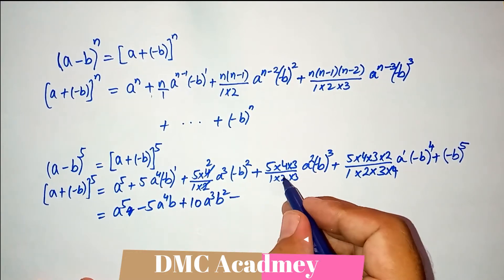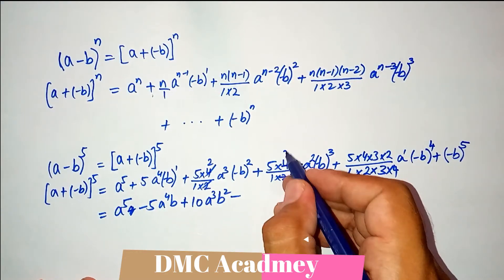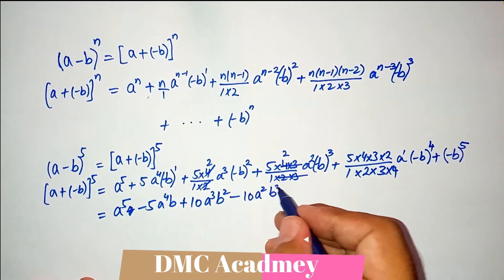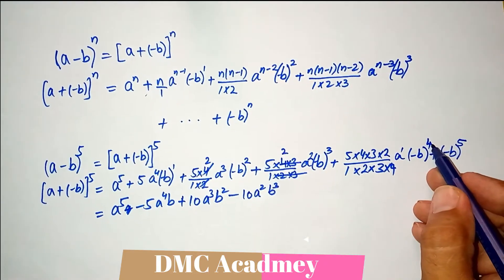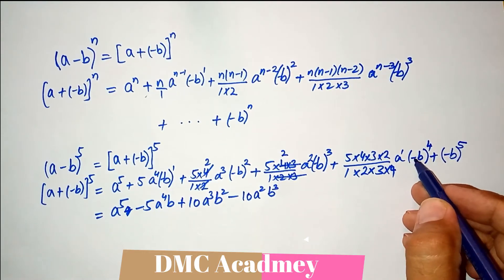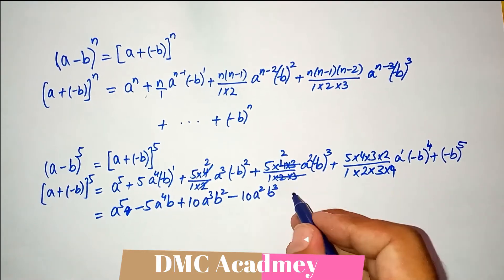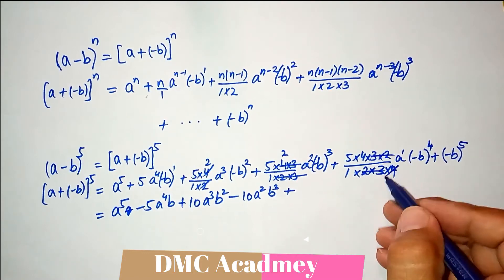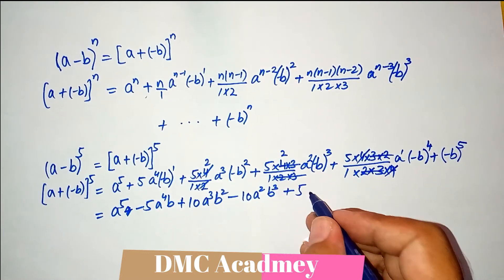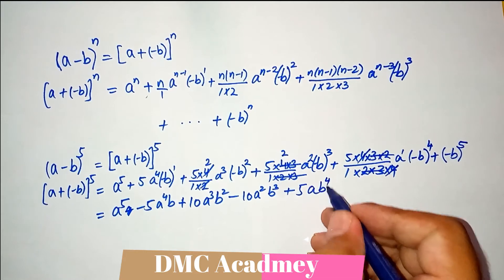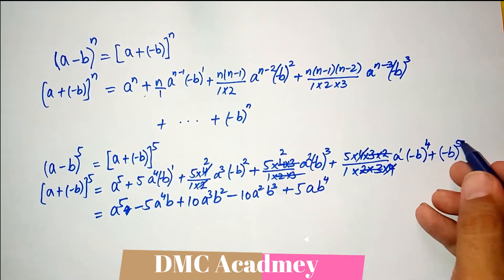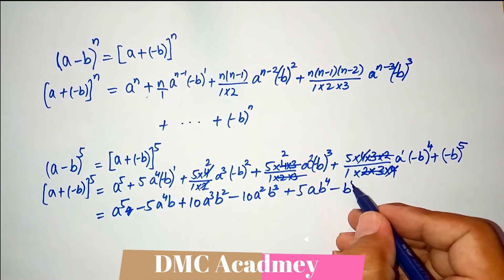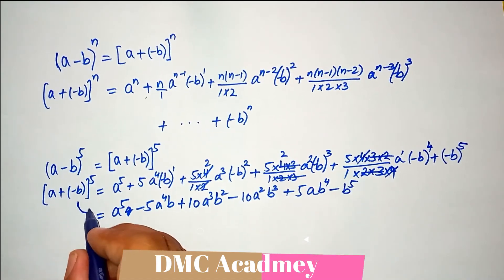The signs alternate: minus times plus gives minus. So minus 10 times a squared times b raised to power 3. Then the power is even, so minus is absorbed, giving plus 5 times a times b raised to power 4. Then the power is odd, so minus comes out — minus times plus gives minus — giving minus b raised to power 5. So this is the formula when it is in minus.